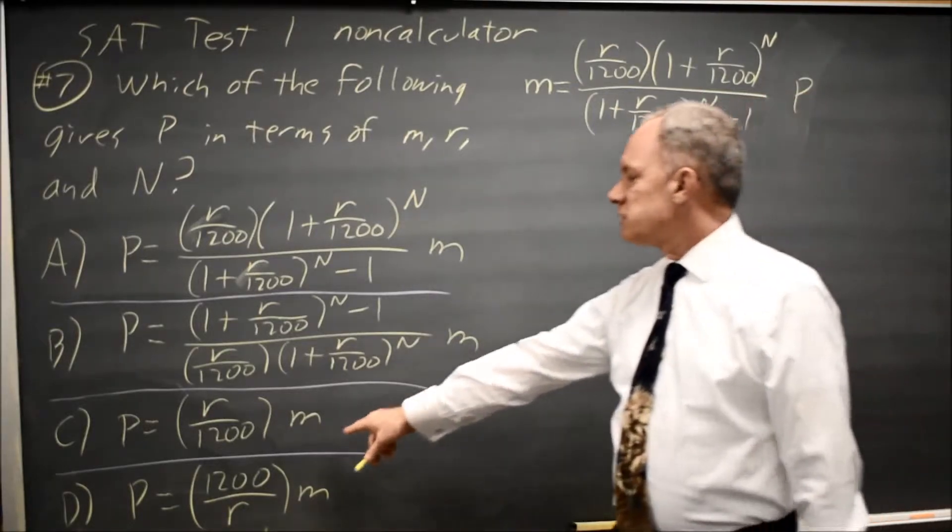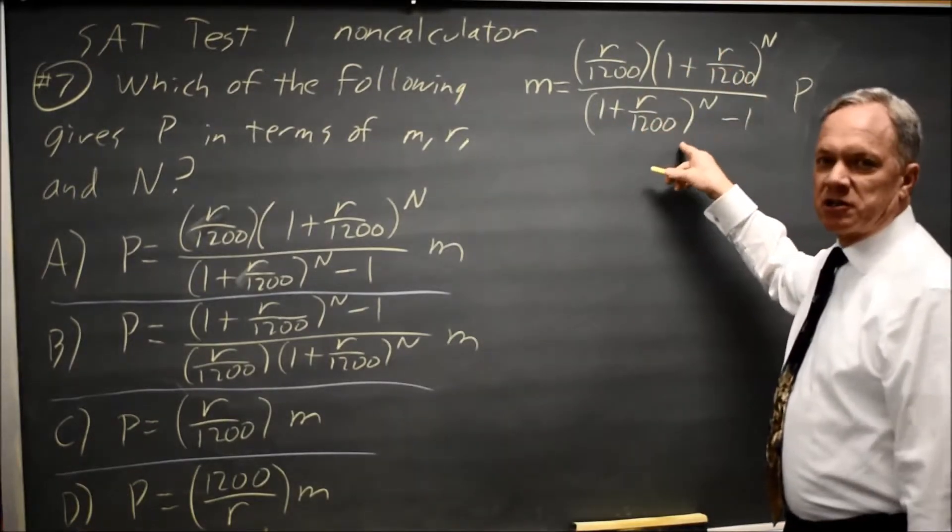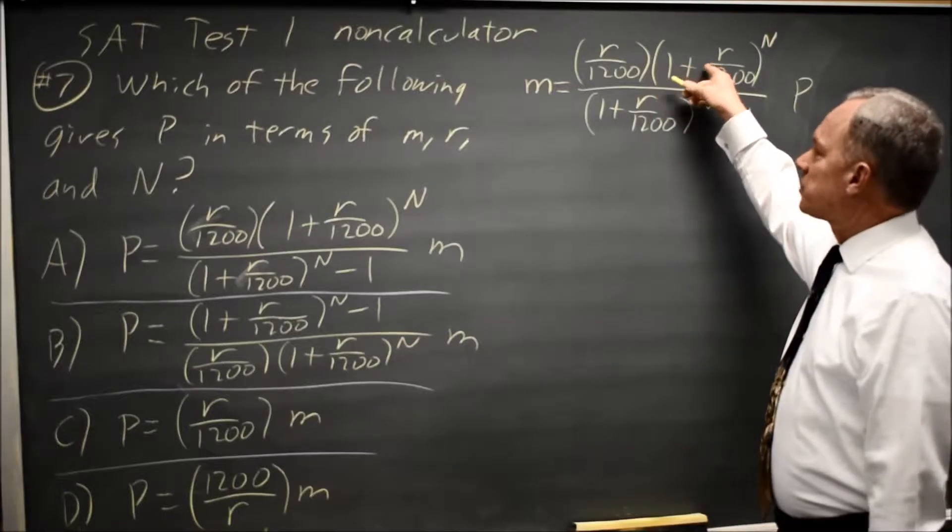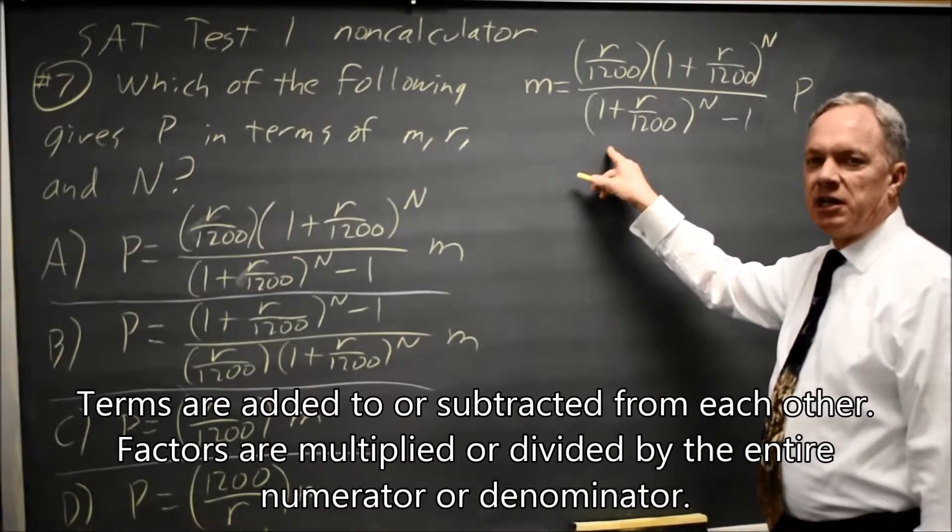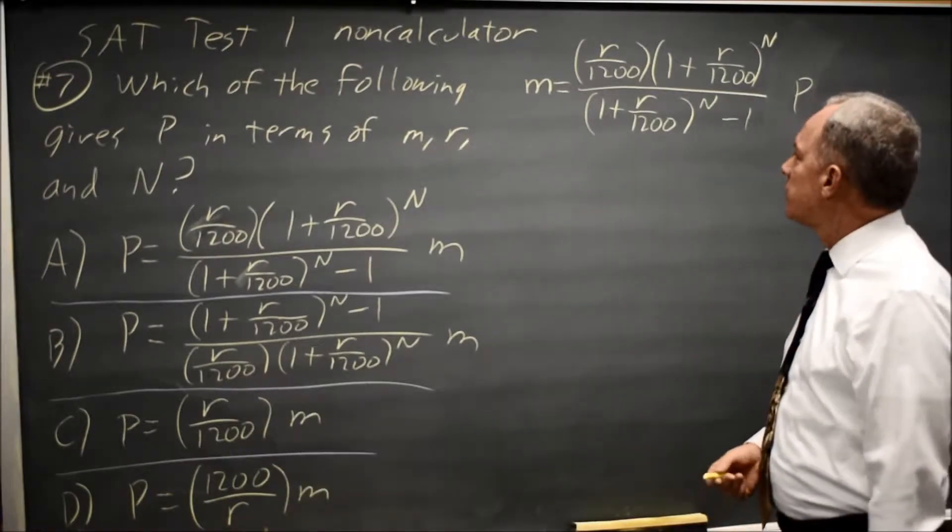Looking at this, answer choices C and D, this term and the entire denominator disappear. That comes from a common error of canceling a factor of the numerator with a term of the denominator. You can never cancel terms in a fraction, you can only cancel factors.